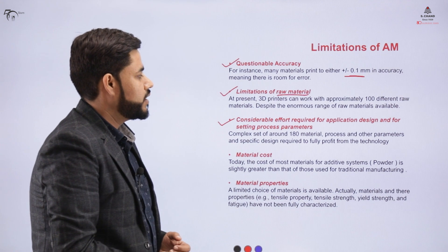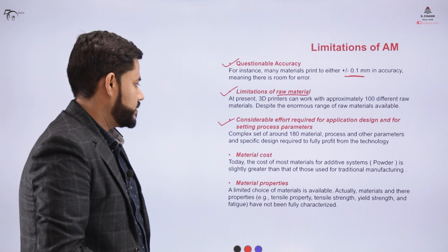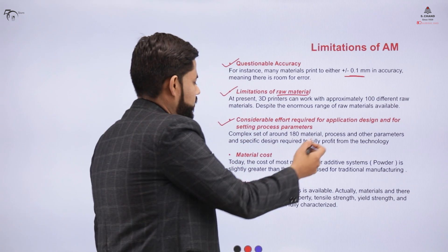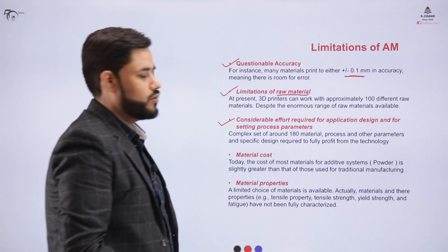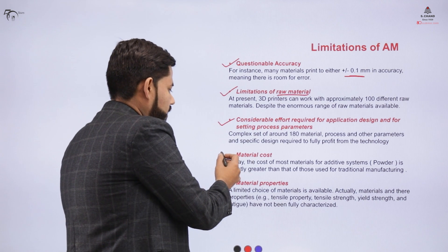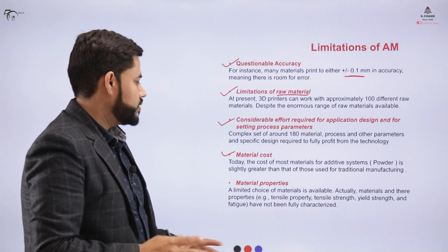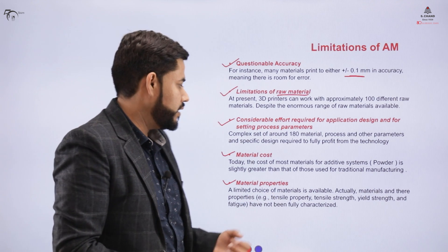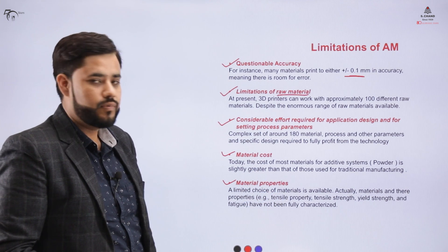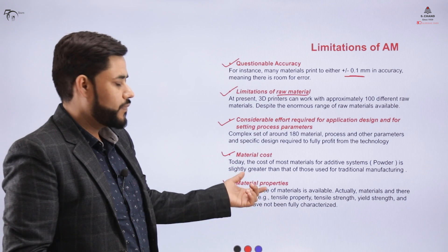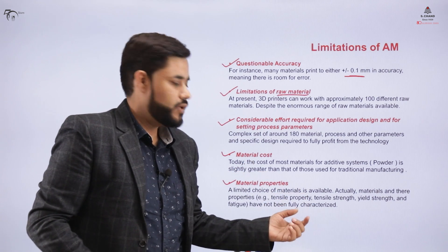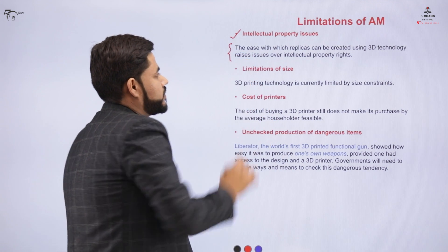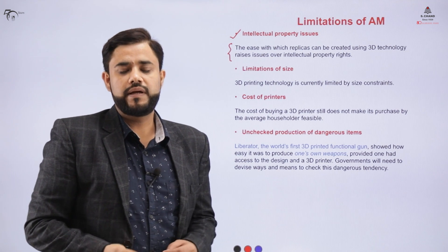Certain efforts are required for setting up the process. For complex processes involving certain materials, design requirements and other parameters need to be carefully considered. Material cost plays an important role because powders are used to add material layer by layer. Material properties are limited — requirements such as tensile strength, yield strength, and fatigue resistance cannot be fully achieved due to the limited variety of materials available.